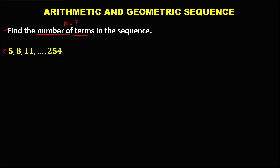First, we need to check if there is a common difference. From 5 to 8 the difference is 3, and from 8 to 11 the difference is 3. Therefore, since this sequence has a common difference, it is an arithmetic sequence. For arithmetic sequences, we use the formula: